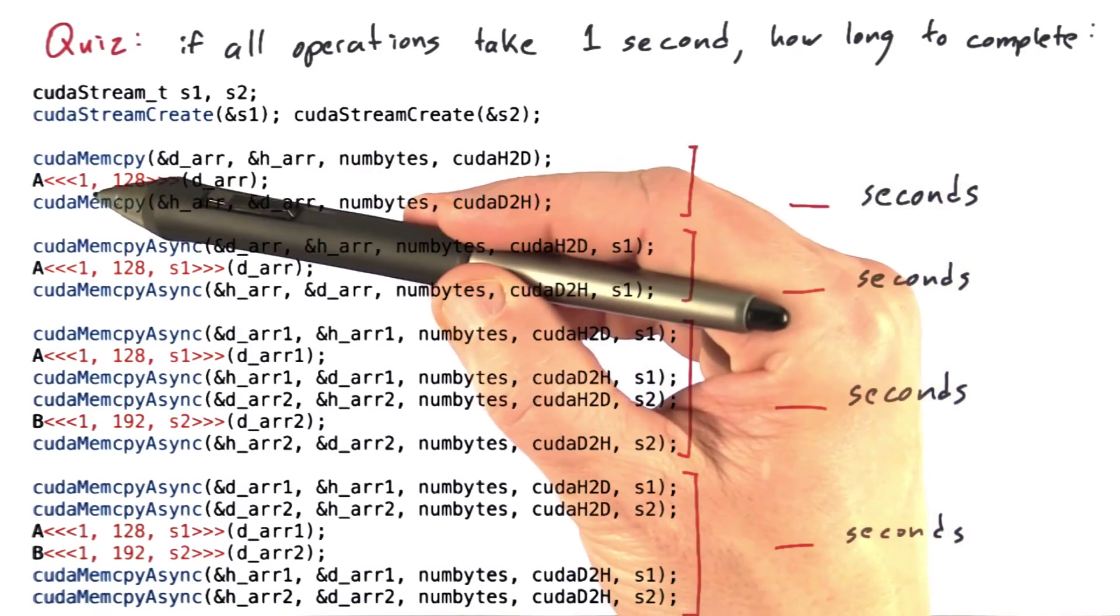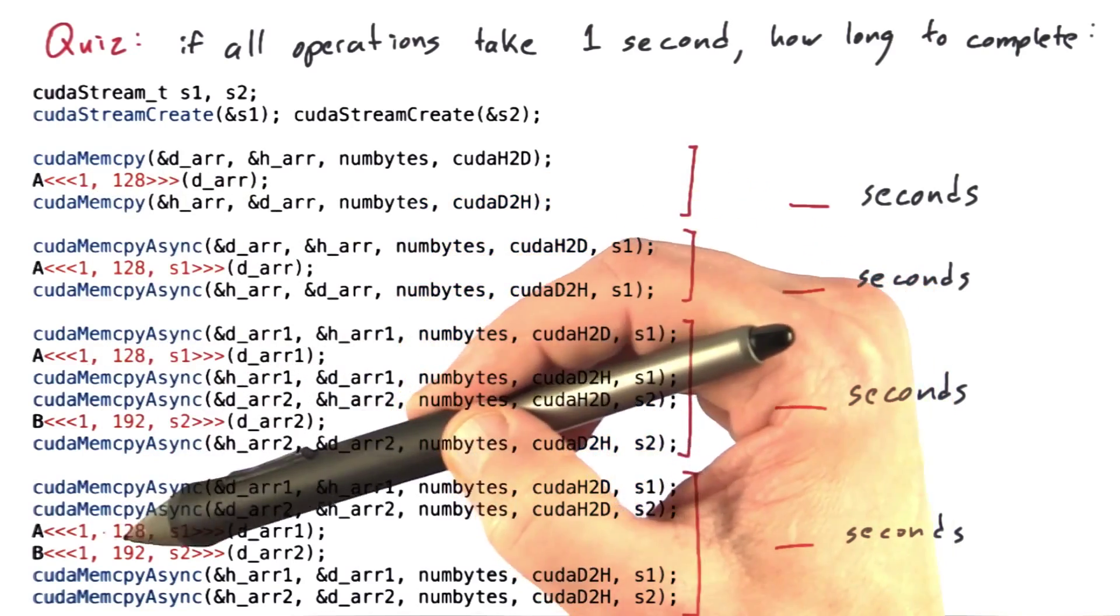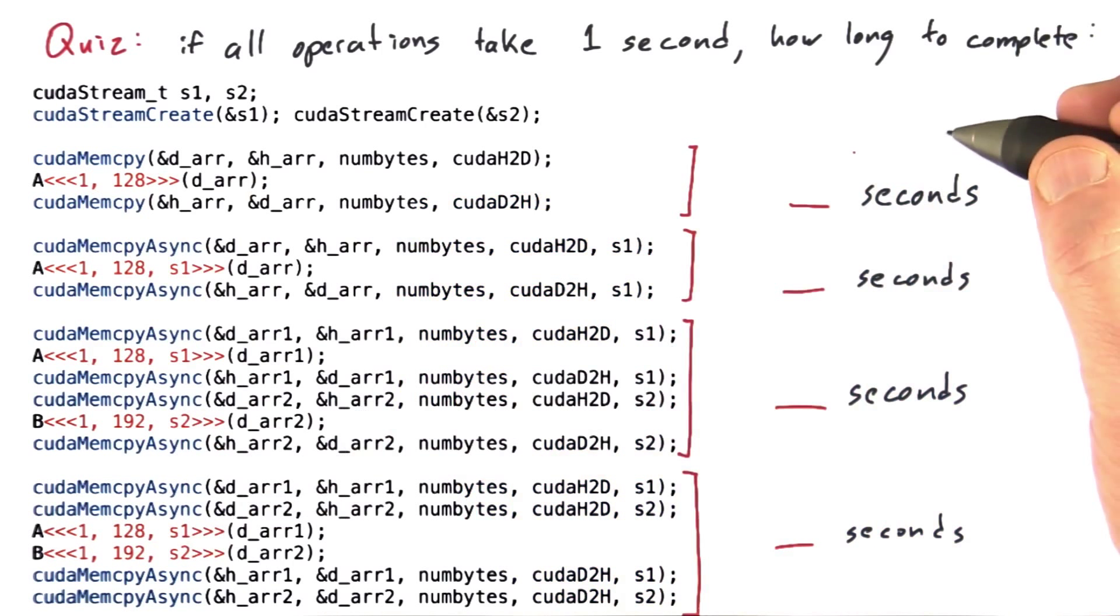Notice that I'm launching a single block with a fairly small number of threads in each of these thread launches. So if all of these operations take one second, what's the minimum time before the final results are ready for the host?